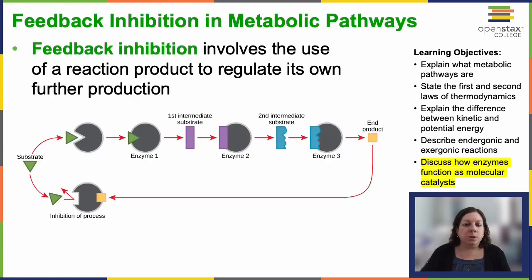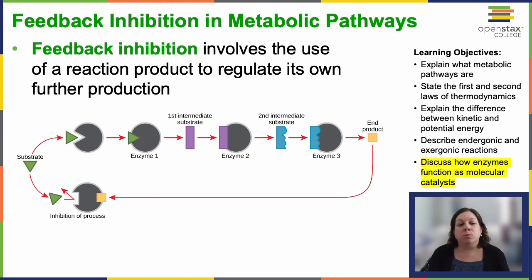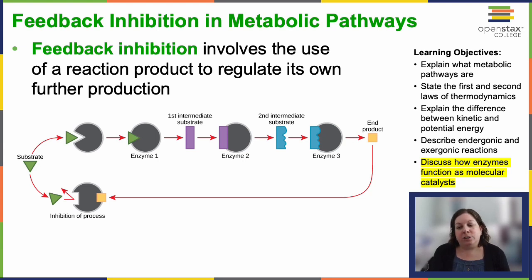Enzyme function can be regulated by various molecules including cofactors, coenzymes, and other cellular components that control enzymatic activity through mechanisms like allosteric modulation — either activation or inhibition — as well as competitive and non-competitive inhibition. Notably, products of cellular metabolic reactions play a role in regulating activity through feedback inhibition. This process involves using a reaction product to inhibit its own production, slowing down either anabolic or catabolic reactions when the product levels are abundant.